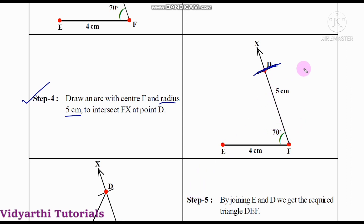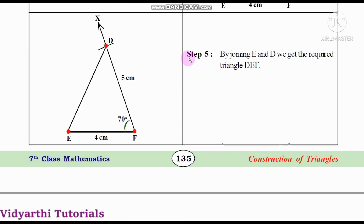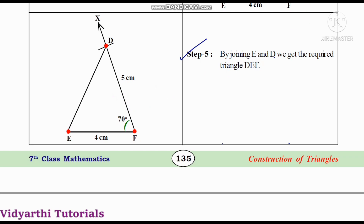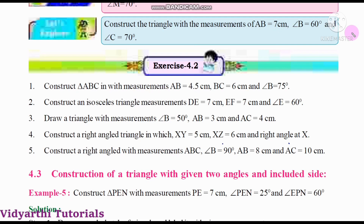Step five: by joining E and D, we get the required triangle DEF. Joining D and E gives us the required triangle. This is the required triangle DEF. Now let's go into our exercise, that is exercise 10.2.